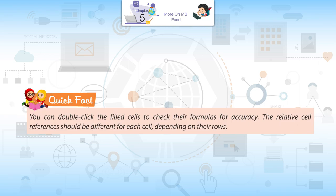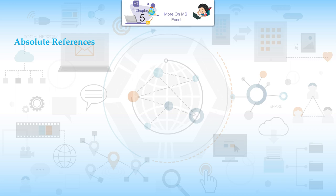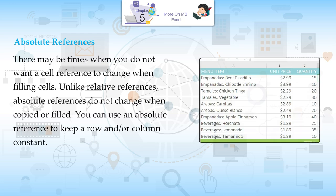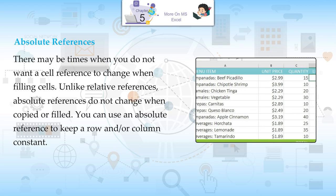Quick fact: You can double-click the filled cells to check their formulas for accuracy. The relative cell references should be different for each cell depending on their rows.